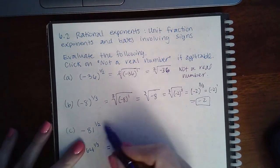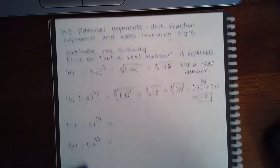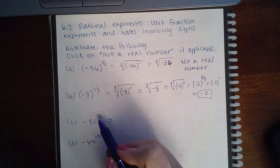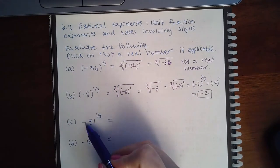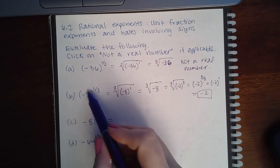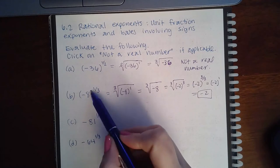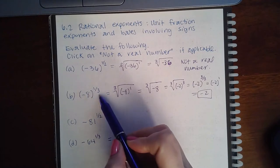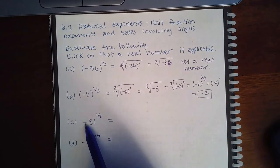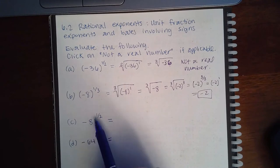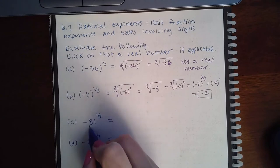Then here, if we change this to radical form, you have to be careful. The power does not apply to this negative. If that power applied to the negative, it would have been included in the parentheses to show me that this entire thing is the base to this exponent. But since this negative is not in parentheses, that means the only base here is 81.